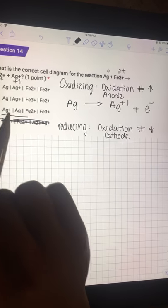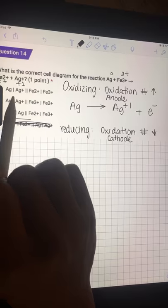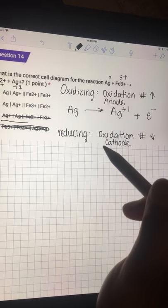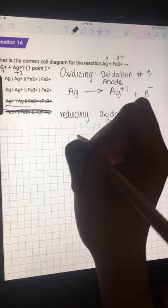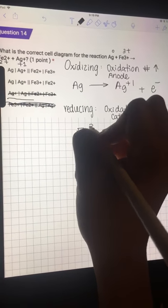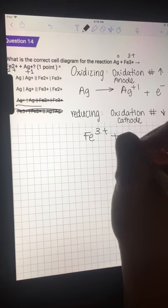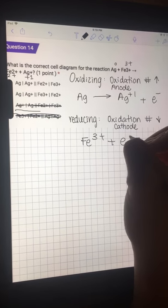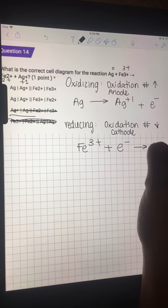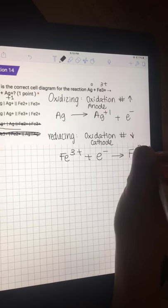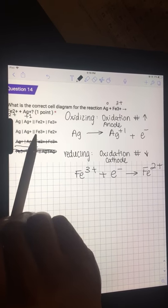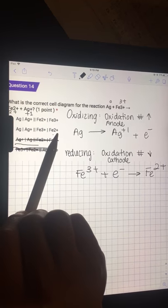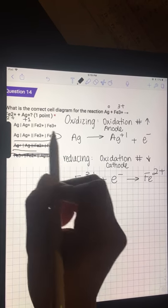Now we look at the cathode. The cathode is Fe3+ plus an electron that it gains to Fe2+. So Fe3+, Fe2+ positive. So this is the answer.